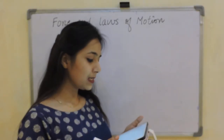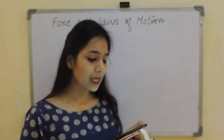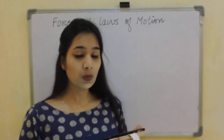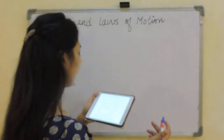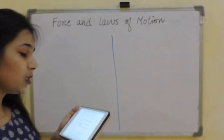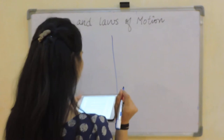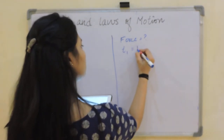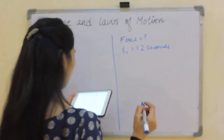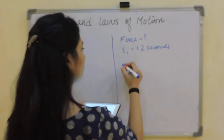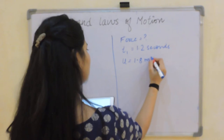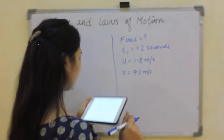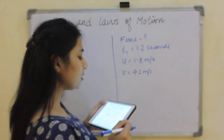The first question: a certain force exerted for 1.2 seconds raises the speed of an object from 1.8 m/s to 4.2 m/s. Later, the same force is applied for 2 seconds. How much does the speed change in 2 seconds? So time T1 is 1.2 seconds, initial velocity U1 is 1.8 m/s, final velocity V1 is 4.2 m/s. For the second part, T2 is 2 seconds and we need to find V2.